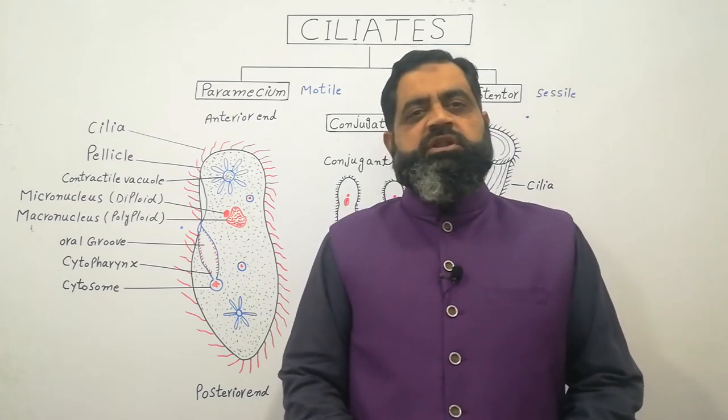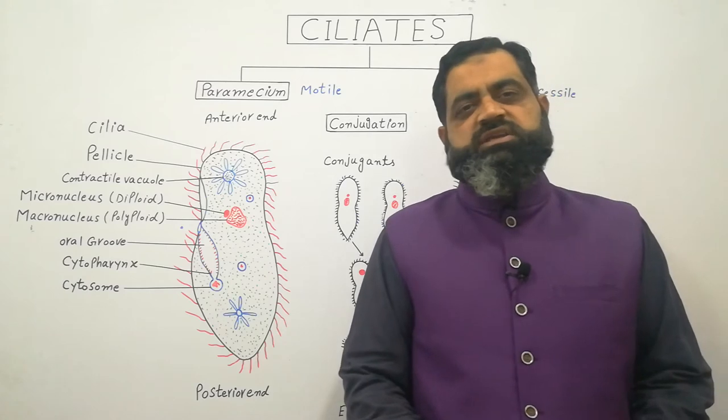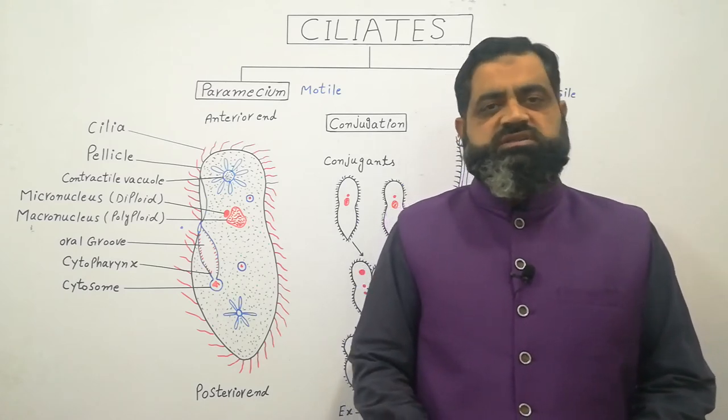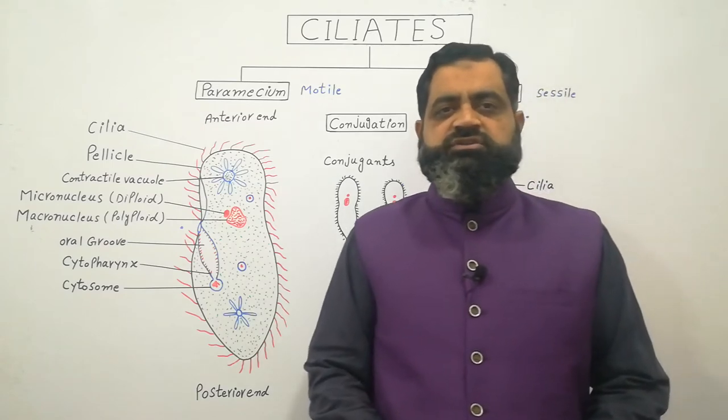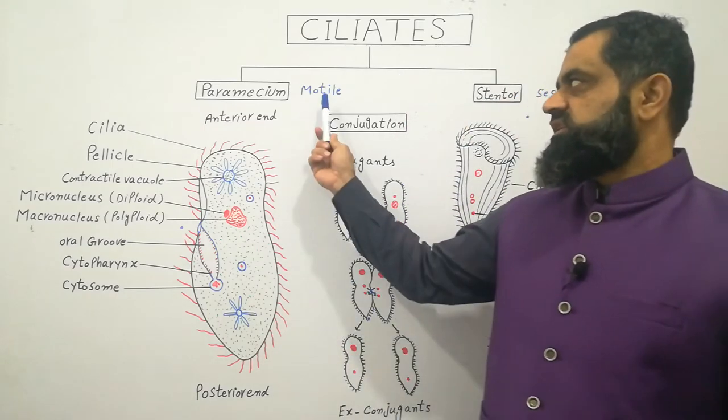Ciliates can be divided into two categories. One are motile ciliates and the others are sessile ciliates. Let's discuss their structure and functions. First of all we are going to study motile ciliate.